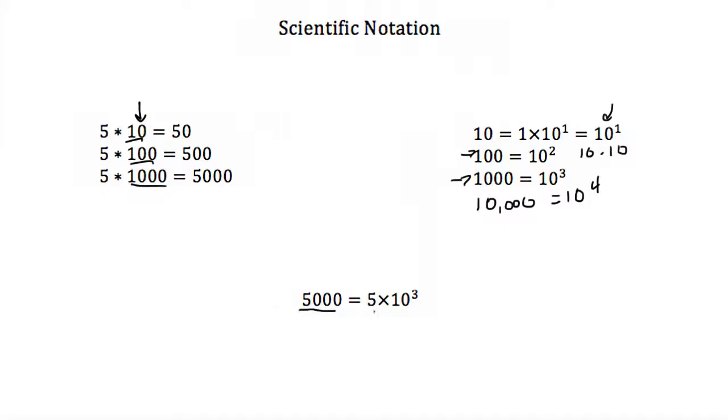Well, when we write 5000 as 5 times 10 to the third, because I would just replace this 1000 with a 10 to the third, we would call this 5000 in scientific notation.